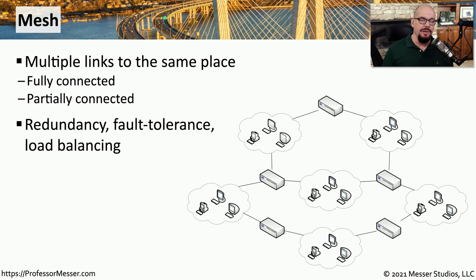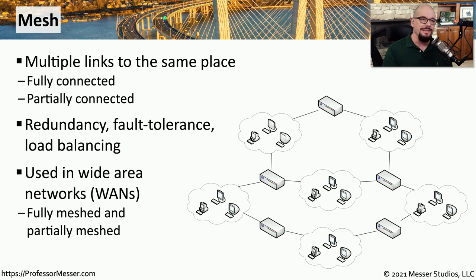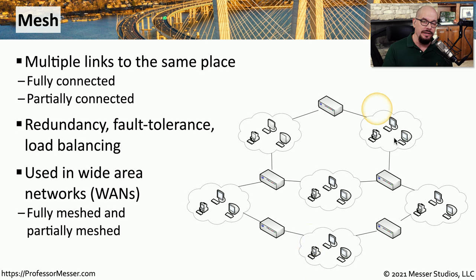You'll commonly use this type of mesh design if you're creating redundancy or fault tolerance, or perhaps you're designing a load balanced network, and you can use different parts of the network to share that load. Probably the most common place to find a wired mesh network is over a wide area network, where you can create multiple links to other sites so that you can have a primary connection from one site to the other, and then a backup or secondary connection that you can use if you run into problems.